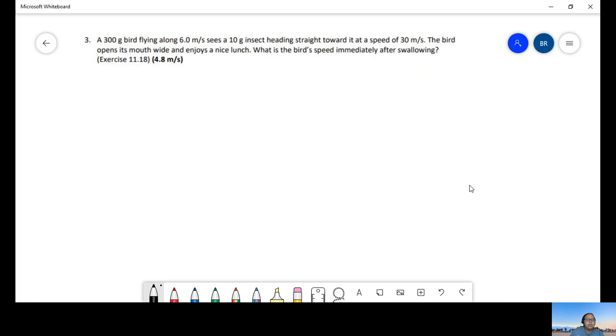So let's read it together. You have a 300-gram bird flying along at 6.0 meters per second. She sees a 10-gram insect heading straight forward with a speed of 30 meters per second. The bird opens her mouth wide open and enjoys a nice lunch. So here we want to know what is the bird's speed immediately after swallowing.